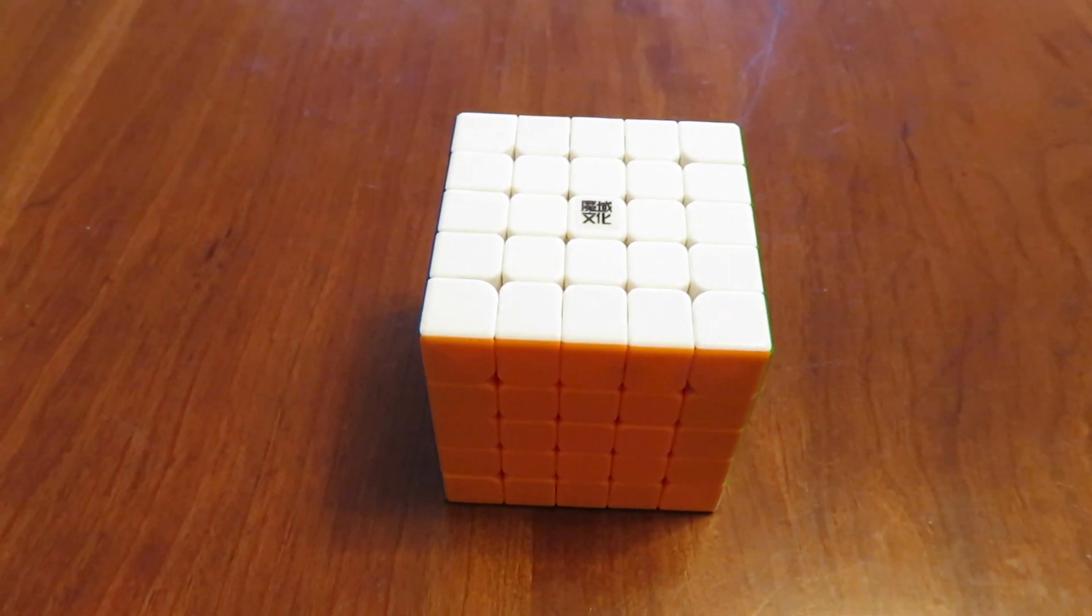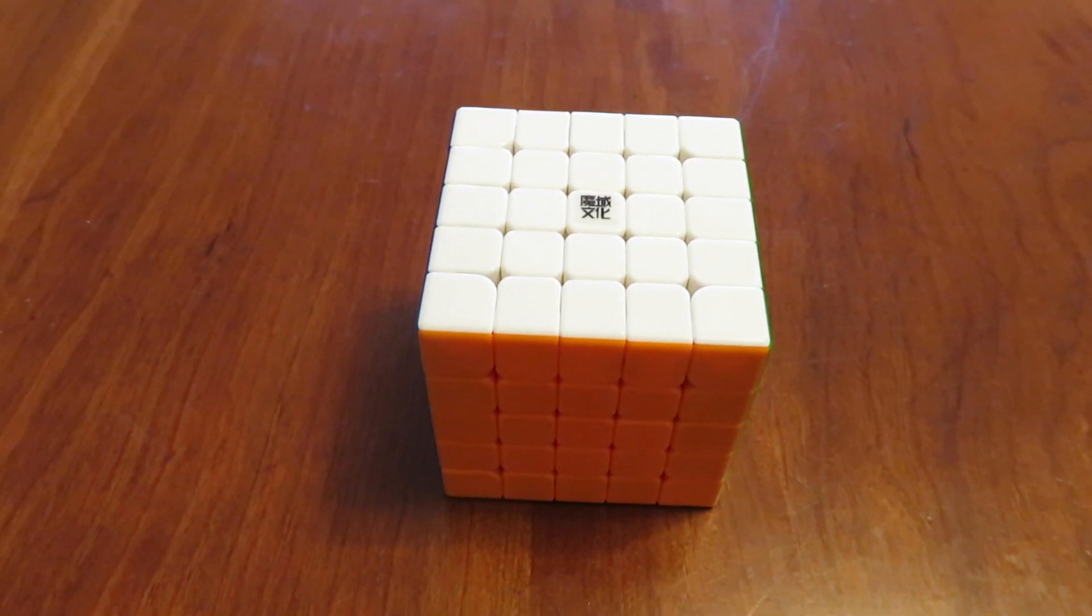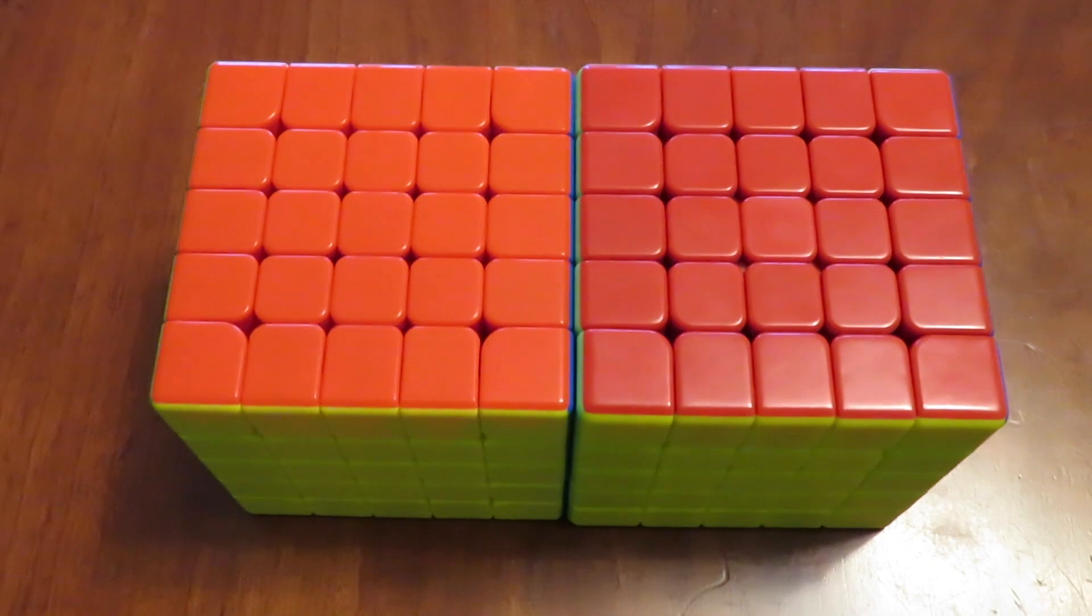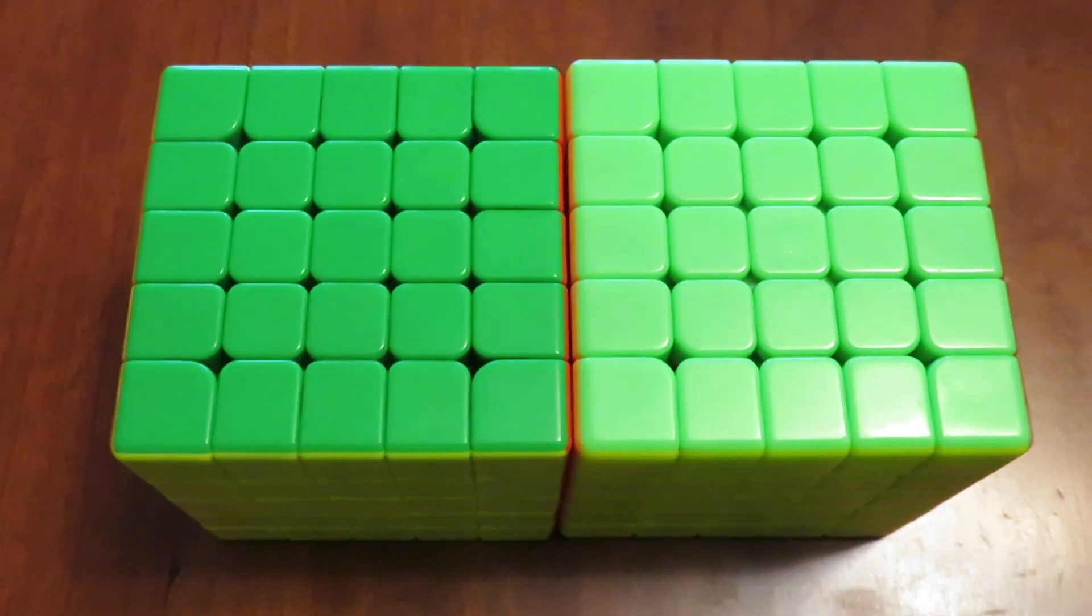This cube is not released yet, so I don't know exactly what the price will be, but I suspect it will be around $40 like the price of the Aochuang GTS-M. It has the new shades Moyu has been using recently with a lighter red and a darker green and orange.